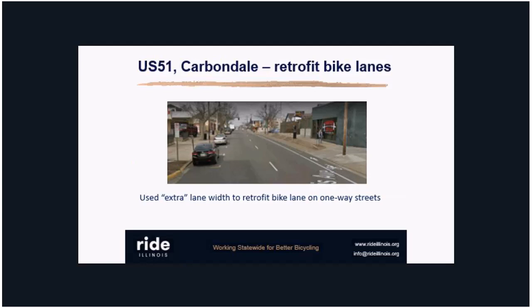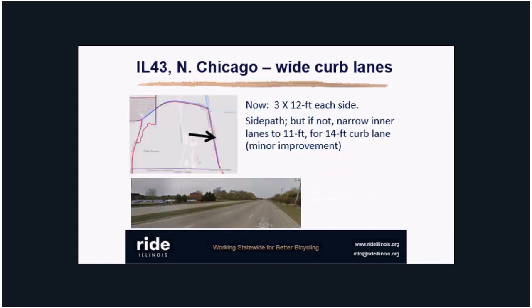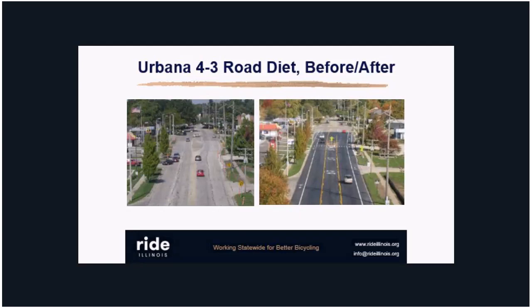Carbondale is an example: they had extra space on one-way roads with lanes that were too wide. When they resurfaced the road, they had enough room to add a bike lane on the right side — easy, didn't force a wider road, just changed where the stripes were. In North Chicago, using Strava's bicycle heat map, we saw a popular road with cyclists where lanes were 12 feet wide on each side. Our request was simply to narrow the two inner lanes, leaving 14 feet on the right side for bicyclists — a very minor improvement that costs nothing, just repositioning the dashes.